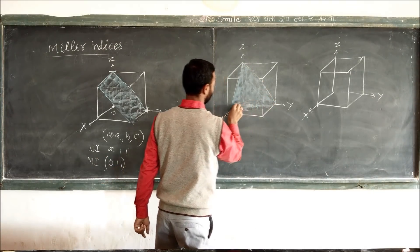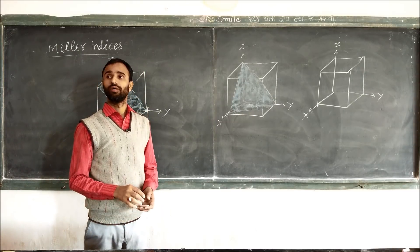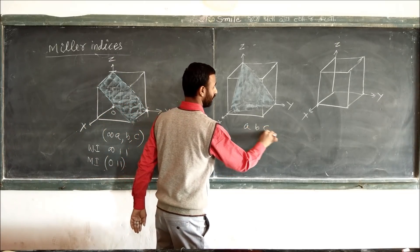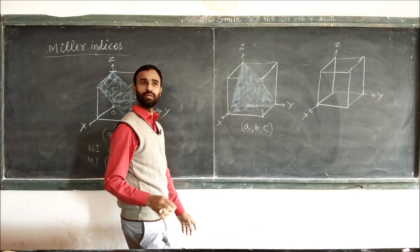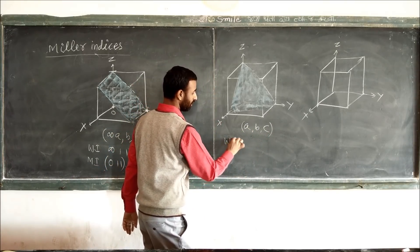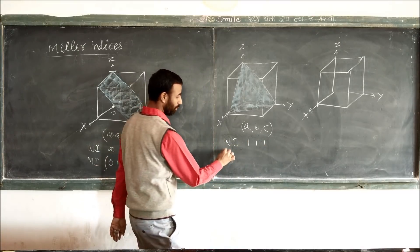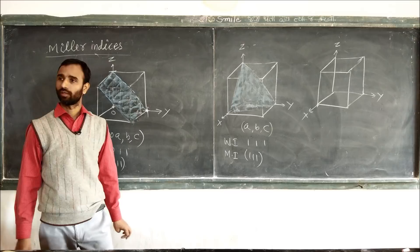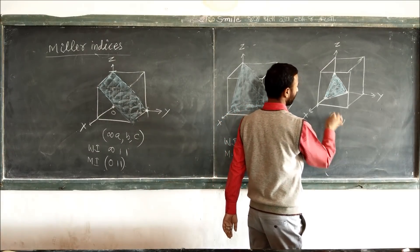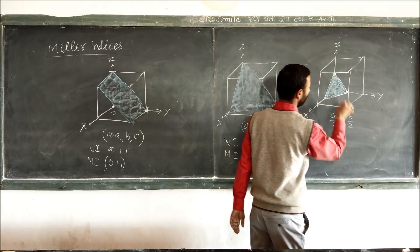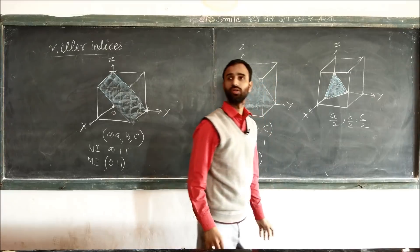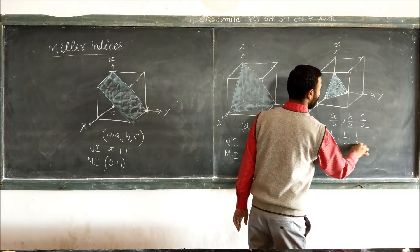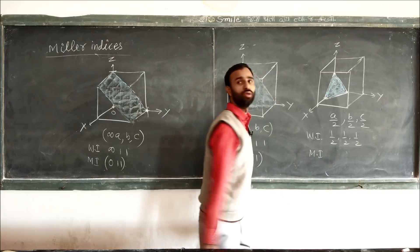For the plane cutting all three axes at A, B, and C — the intercepts are A, B, C. The Weiss indices are 1, 1, 1. The Miller indices are the same: (1, 1, 1). For a plane cutting at A/2, B/2, C/2 — the Weiss indices are 1/2, 1/2, 1/2. Taking reciprocals gives 2, 2, 2. So the Miller indices are (2, 2, 2).